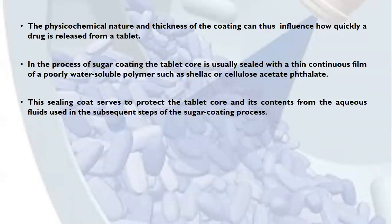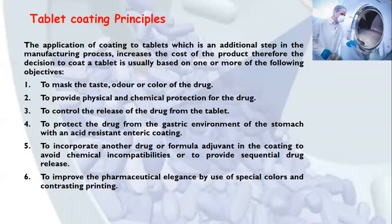In the process of sugar coating, the tablet core is usually sealed with a thin continuous film of a poorly water-soluble polymer such as shellac or cellulose acetate phthalate. These are sealant materials used to seal the tablet core, as sugar syrup applied during coating may cause the core to absorb moisture and become unstable. The sealing coat serves to protect the tablet core from the aqueous fluids used in subsequent steps. However, the disadvantage of shellac is that on long storage it retards the disintegration and dissolution rate of the tablet.